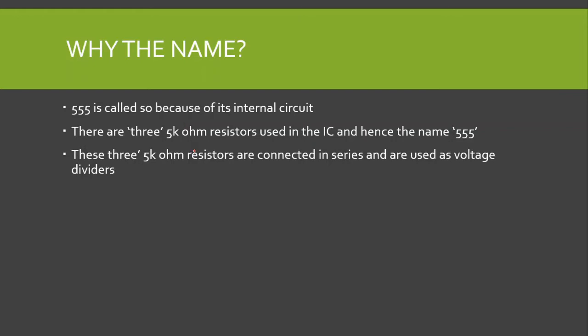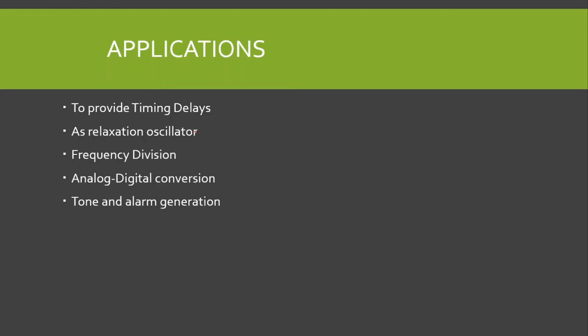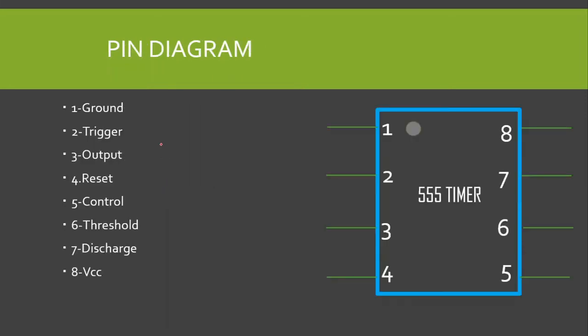The 555 timer is used in a wide range of applications. Some of the applications are: to provide timing delays; it is also used as a relaxation oscillator, which is also called a non-sinusoidal oscillator where the output is non-sinusoidal; it is used in frequency division especially in monostable mode; it is used in analog to digital conversion; and it is also used in tone and alarm generation.